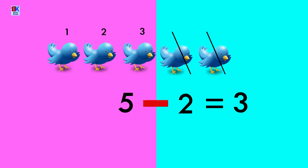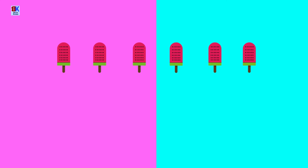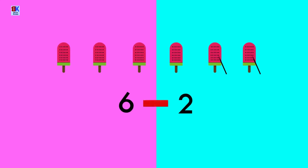Five minus two would be three. Let's see another example. We have six ice lollies. Two of them got eaten. How many are left now? One, two, three, and four. If we subtract or take away two from six, the leftover number is four.